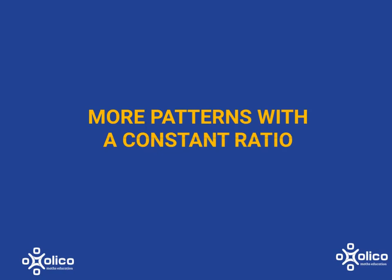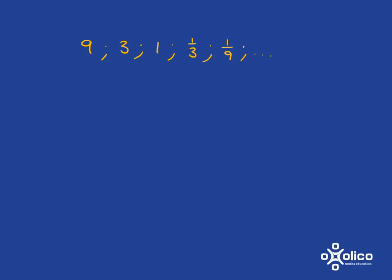We're going to look at one more example of a pattern with a constant ratio. So if we have a look at this pattern here: 9, 3, 1, 1/3, 1/9, etc.